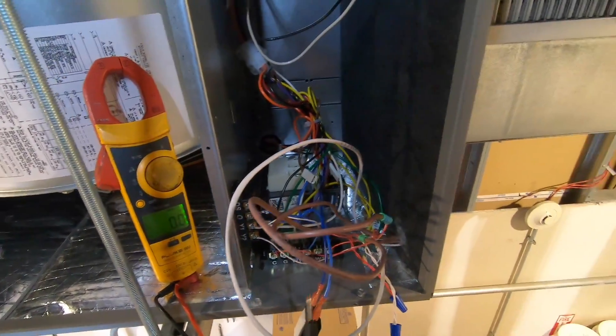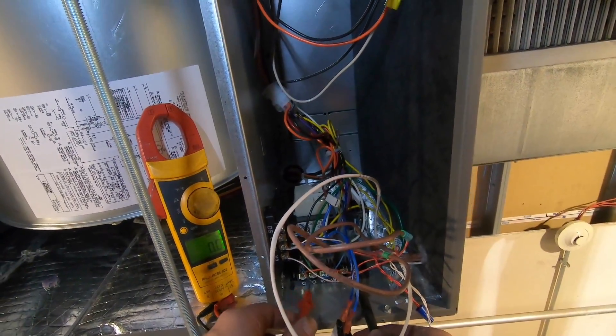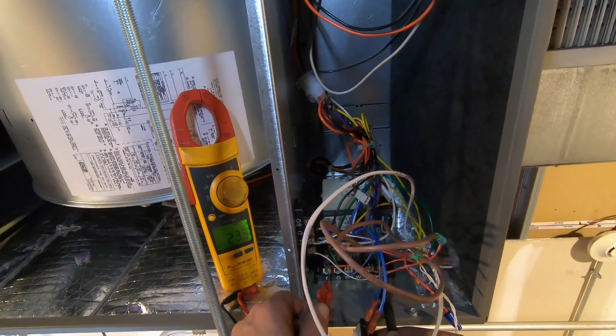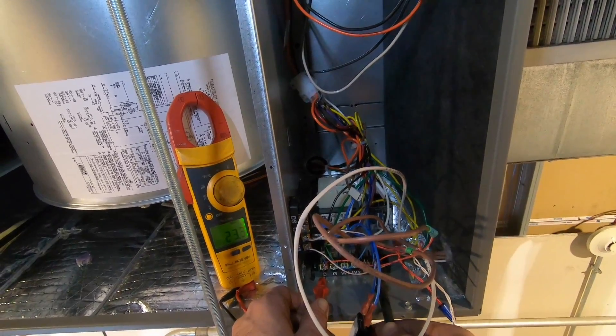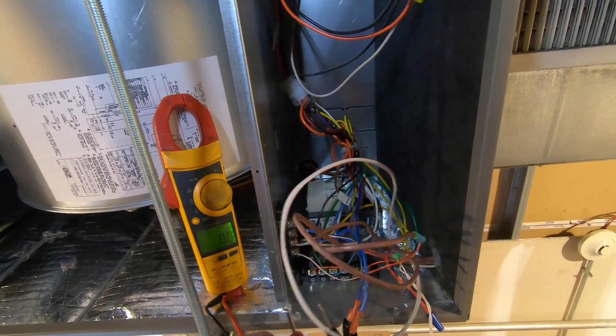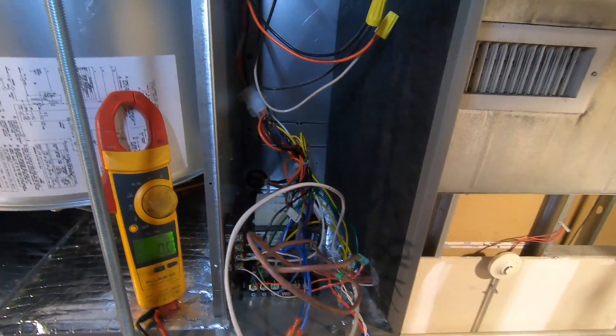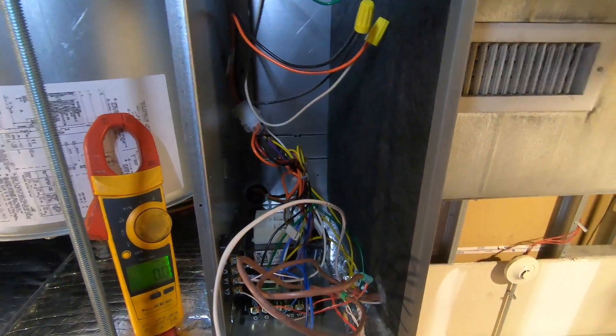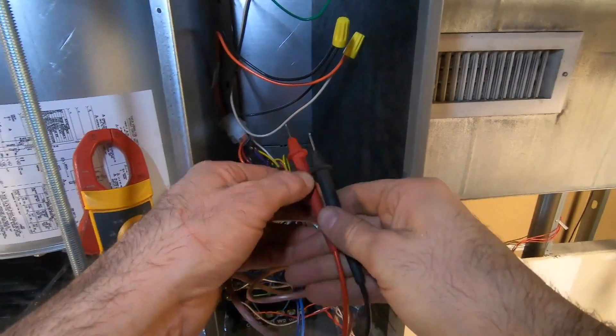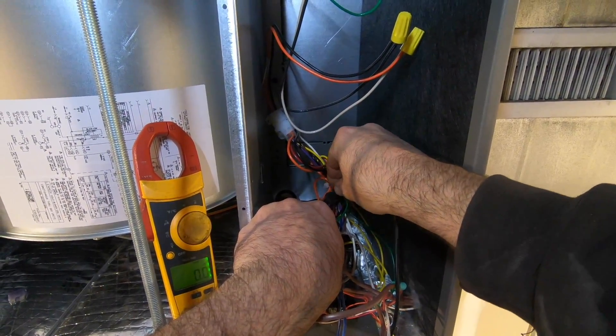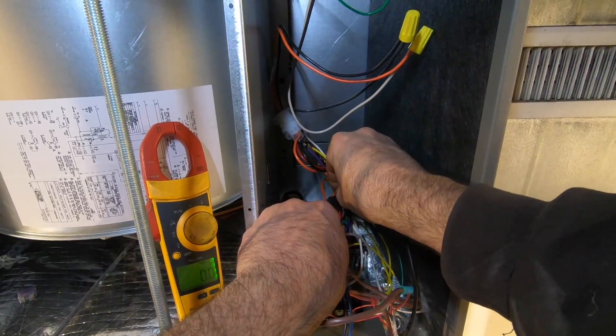Now we're going to check R and C. We've got 23 volts. Let's turn that off. So right now we had 23 volts. Let's make sure we have no voltage on these wires. Nope.